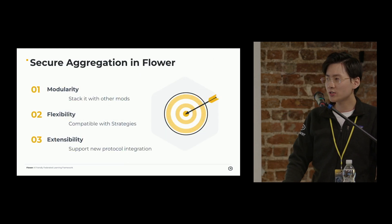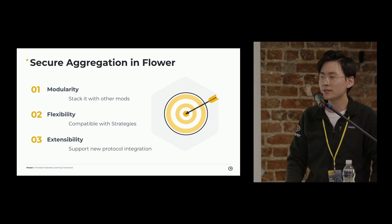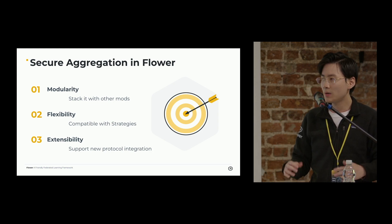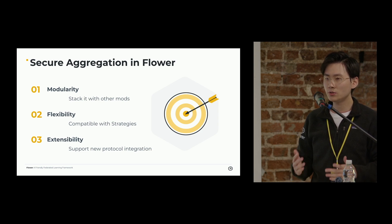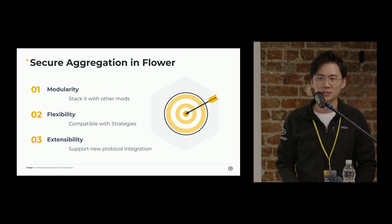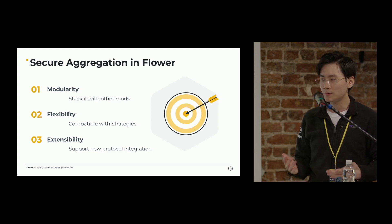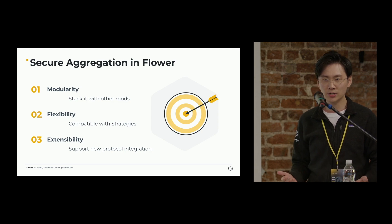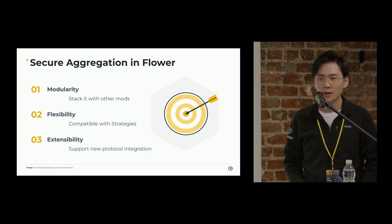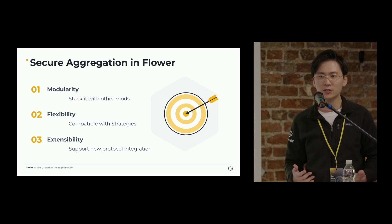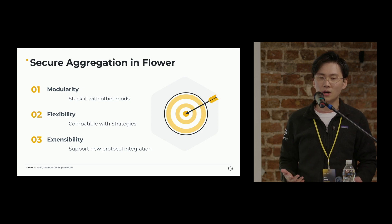Our SecAgg aggregation implementation in Flower features three things: modularity, flexibility, and extensibility. For modularity, unlike many other implementations, we go for a modular approach, which means it's very easy to use SecAgg protocols with other components in Flower — for example, with local DP mod or the fixed clipping mod. Our design is compatible with all existing strategies, so you can run the SecAgg protocol with federated averaging and also work with central DP. However, due to the very nature of SecAgg, strategies will not have full control of the aggregation process, so some strategies might be compromised because of this.